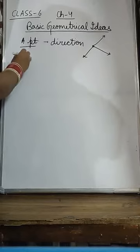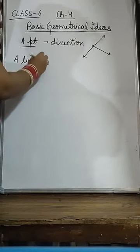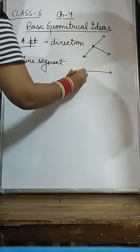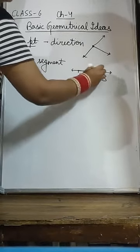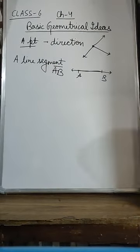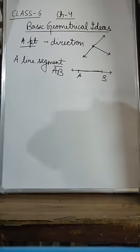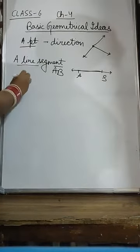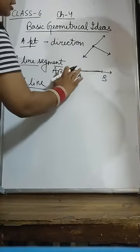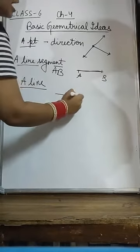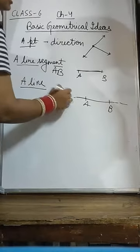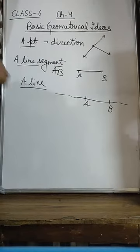Next we are coming to a line segment. What is a line segment? It is the shortest distance between two points. Suppose this is point A and this is point B. So this line segment AB is just the shortest distance between point A and point B. Next we are coming to a line. What is a line? A line is an extension of line segments — we don't know where it is going.